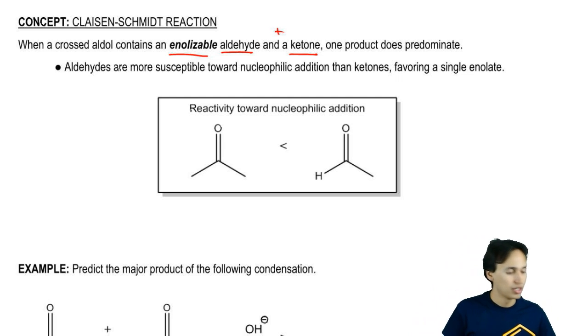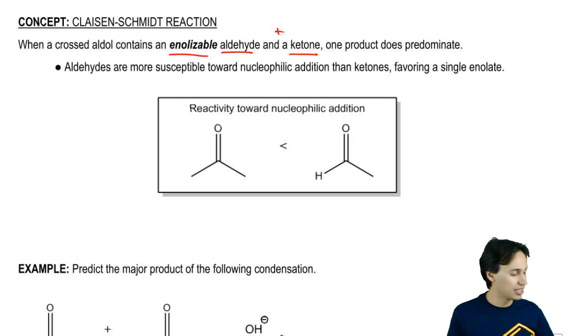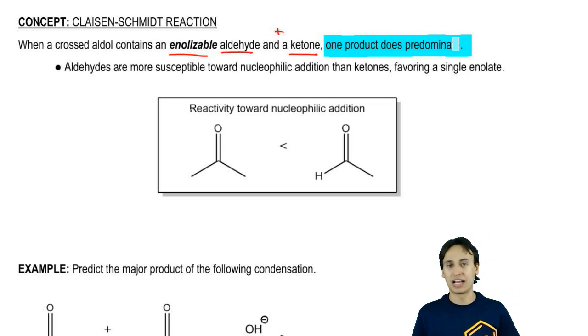It turns out that you actually get kind of lucky if you mix an aldehyde and a ketone together that are enolizable, because theoretically they could both react and you'd get a cross product. But what happens in real life is that one product does actually predominate.